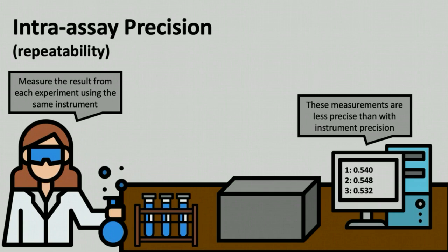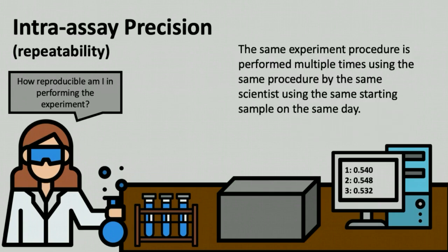To summarize, intraassay precision, or repeatability, measures the reproducibility of the experiment and requires that the same experiment is performed multiple times by the same scientist on the same day, using aliquots of the same sample, with the final measurement being made by the same instrument.